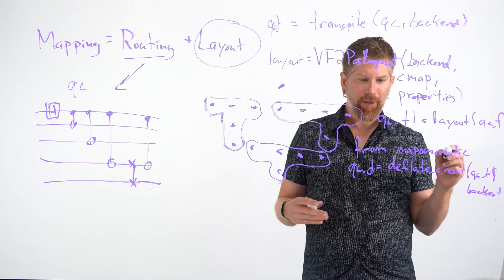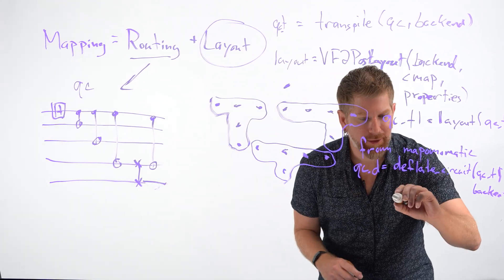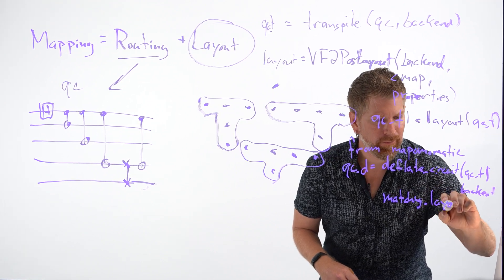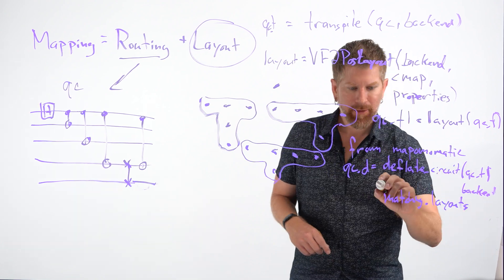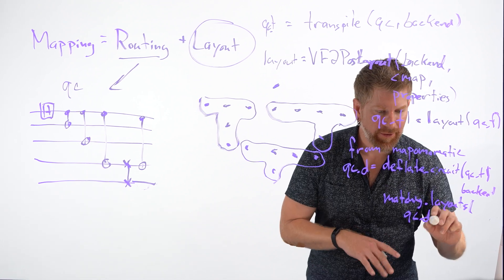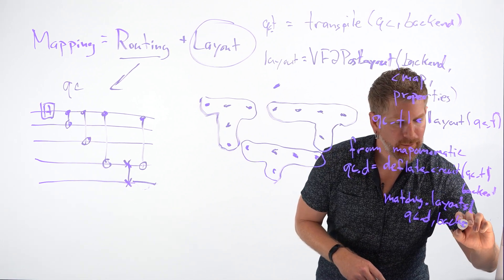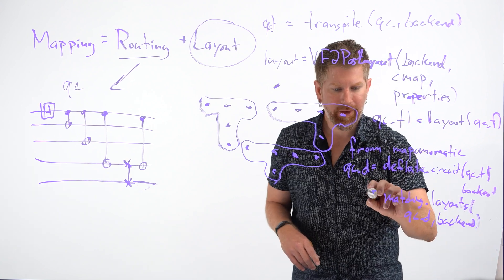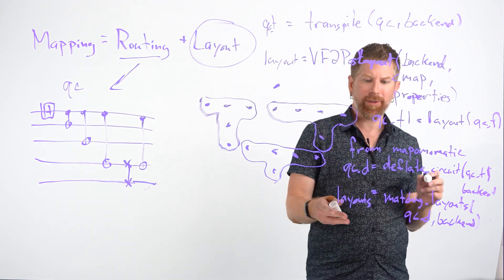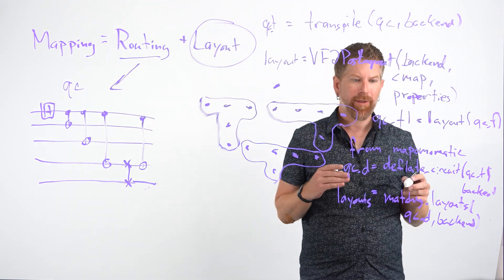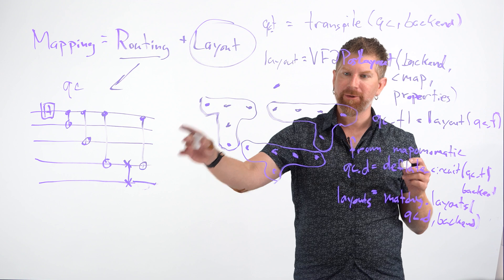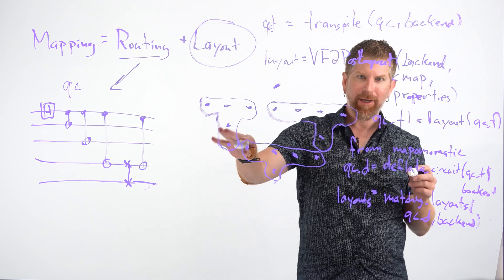We also need to apply the layouts. Before we apply the layouts, we need to find all the matching layouts. And that's on our deflated circuits for the backend. And that will give us all of our layouts.